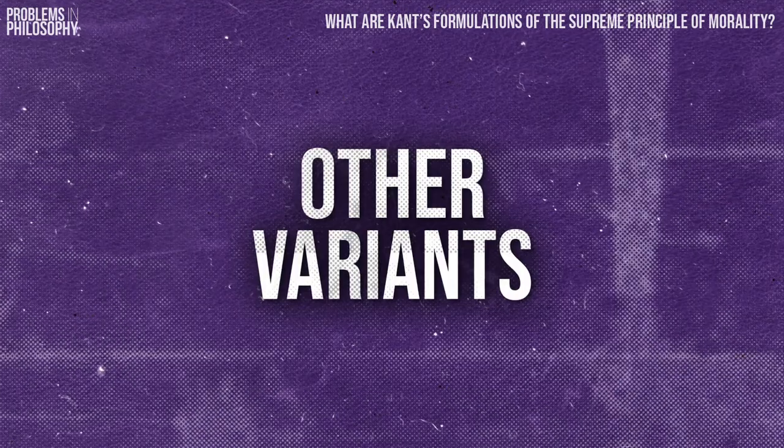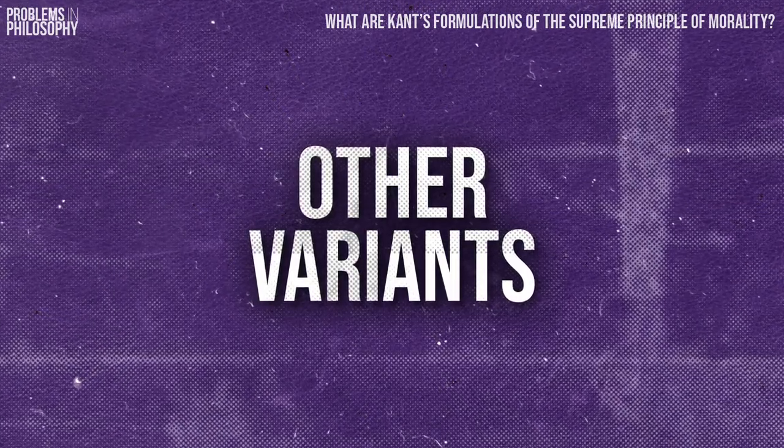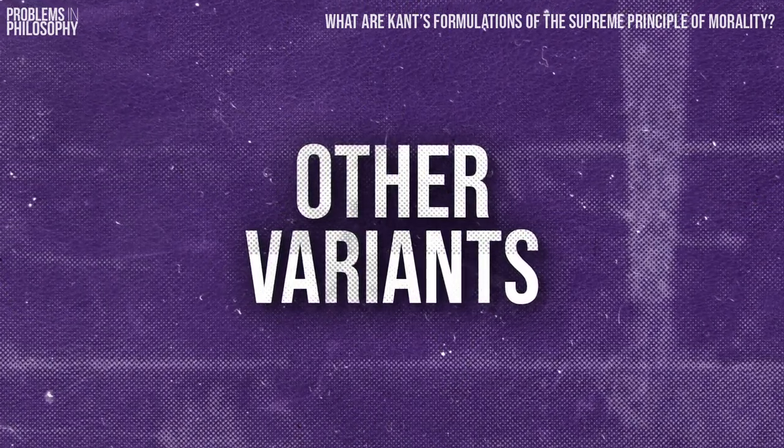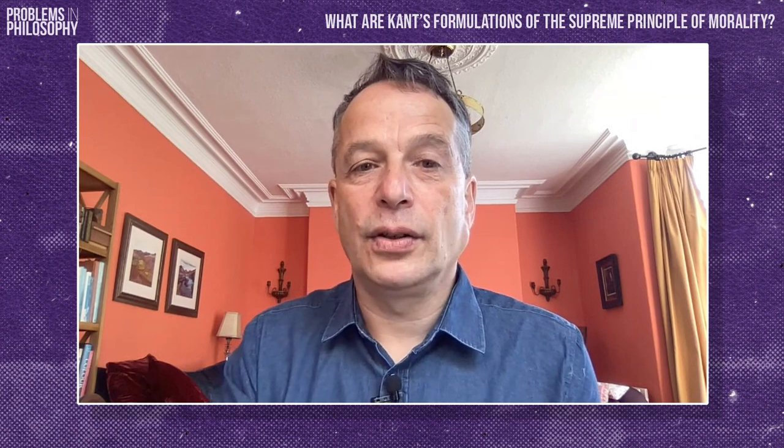Kant thinks the first type of incoherence corresponds to strict duties which you can never violate, and the second to wider ones where you have more latitude. Thus far, although Kant has introduced a fairly minor variant on what we had in section one and has gone through some more examples, he hasn't departed much from the formulation we had previously.